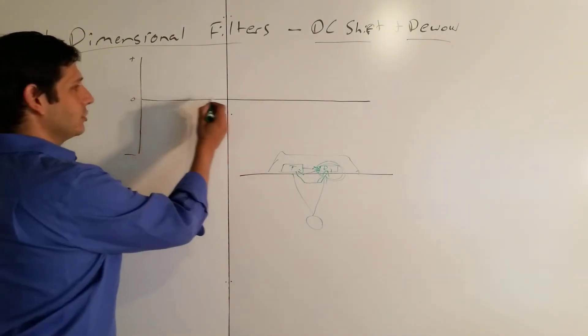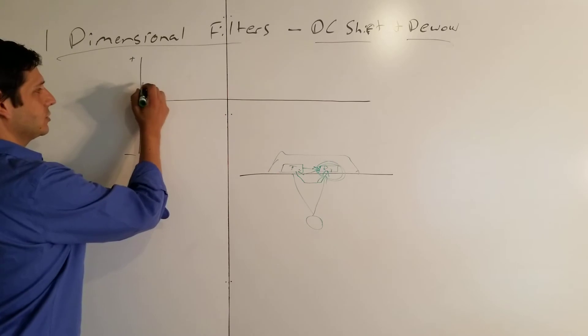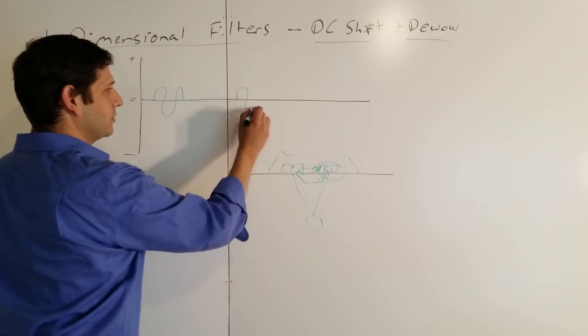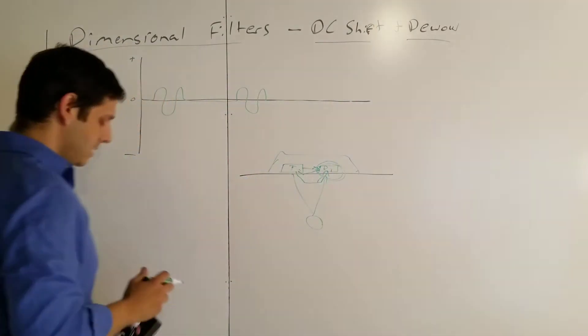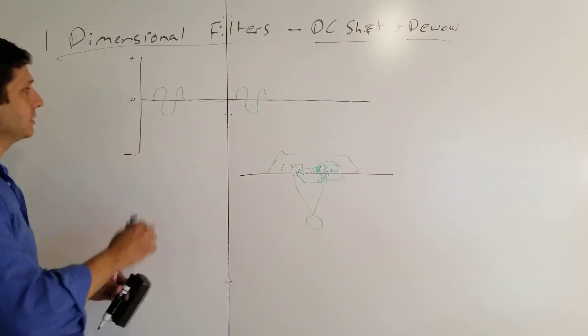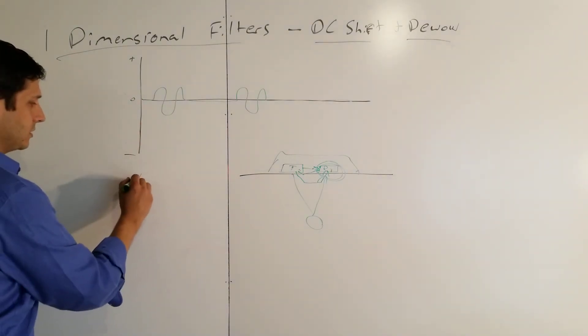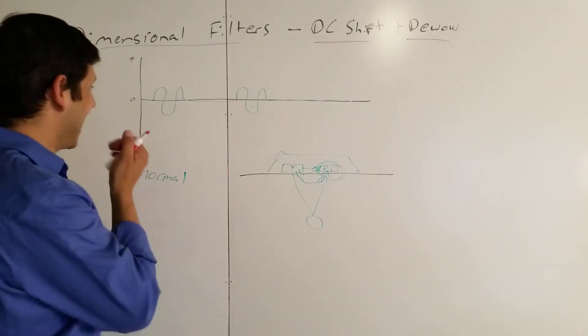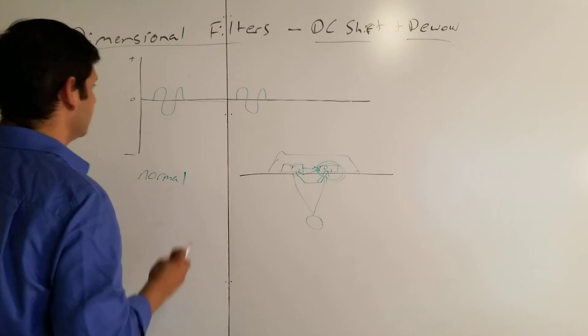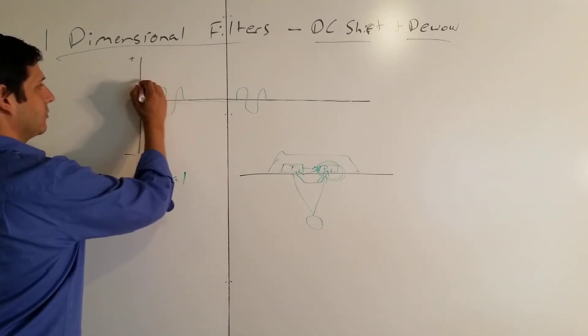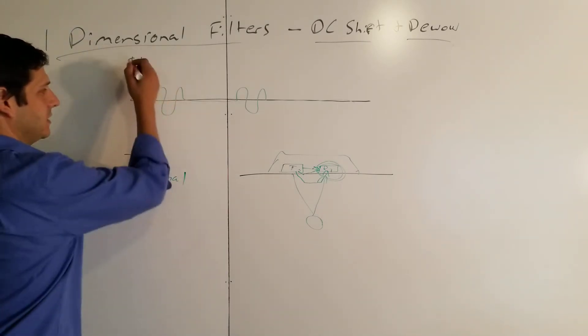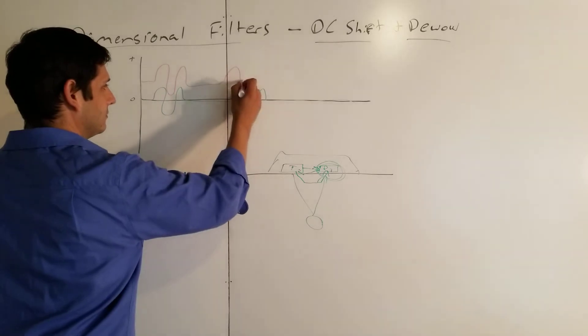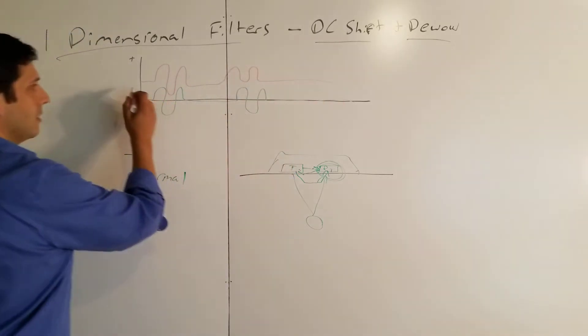What's the result of all this inundation? Well, rather than running along your zero, what happens is your trace looks something more along these lines. Here's the original one that I showed you, something along like this. Instead, what happens, this is normal. Instead what happens is this. It shifts everything. And now, instead of it being on zero, your mean is somewhere in the positive or the negative. In reality, you're getting something like this as your signal.